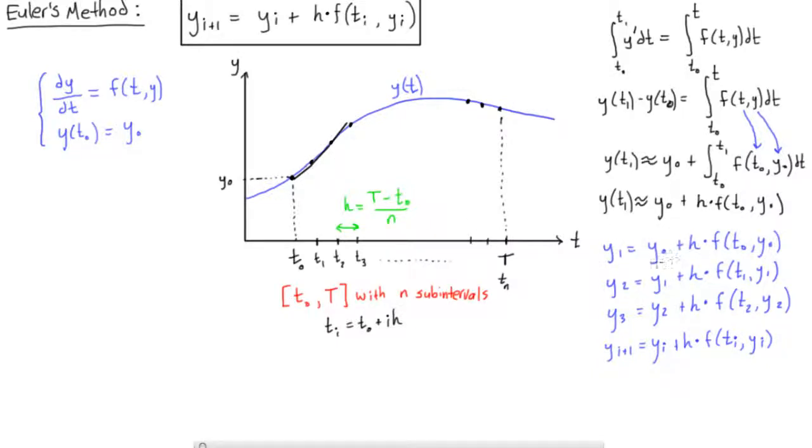Now what we can do is you can see that if we did it for the second point, y2, that would be equal to y1 plus h times, now the function is evaluated at t1 and y1.